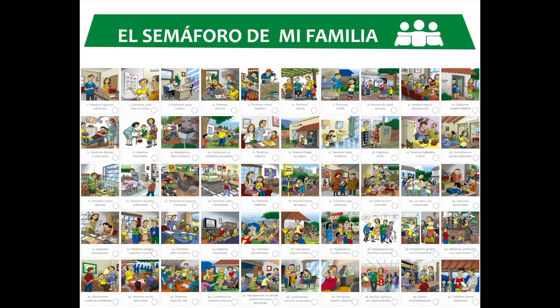We do this with 50 indicators, focusing not only on the traditional indicators of income, health, and education, but also going to other aspects of poverty such as self-esteem and family violence — which are often not taken into account but are clearly very important when families need to be empowered to overcome poverty.